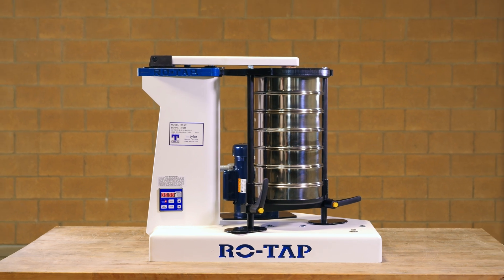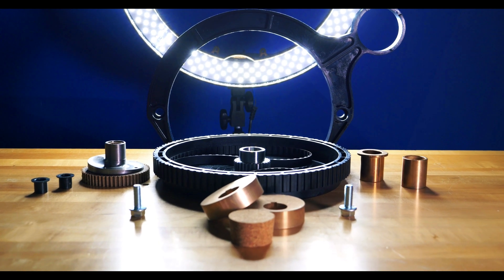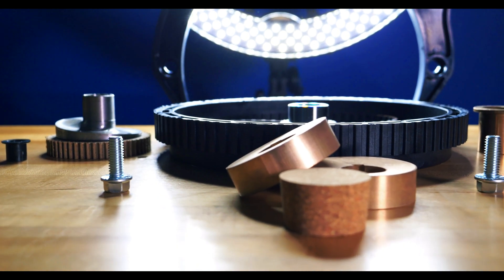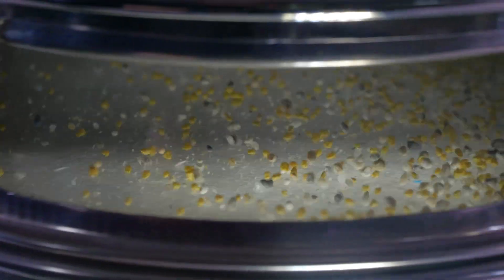And that is how to unbox and set up a Rotap RX29 sieve shaker. But stay tuned, in the future we'll be covering how to replace parts with a Rotap maintenance kit, show you some easy tricks to make things easier, and even go through the process of running particles through an RX29.